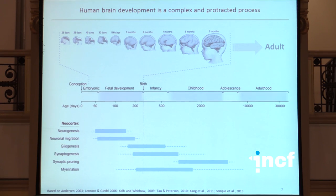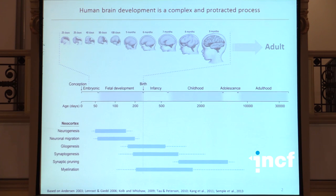The other two major problems are related to ethical limitations — you cannot do experimentation on human brain. And the last problem is that even if you want to, it is actually very hard to collect high quality tissue for many reasons.